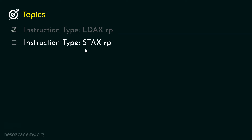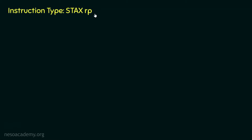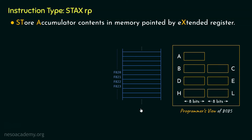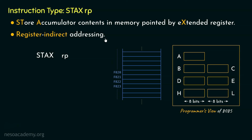Let's now learn about the next instruction type, STAX rp. The mnemonic means we are supposed to store the accumulator contents in the memory pointed by the extended register, or in other words, the register pair. We also need the memory because the content within the accumulator is to be stored in memory locations. Just like the previous instruction type, within STAX rp we are not talking about the memory location directly — we mention the register pair. So this is also clearly a register indirect addressing mode, and STAX rp falls under the category of 1-byte-long instructions.